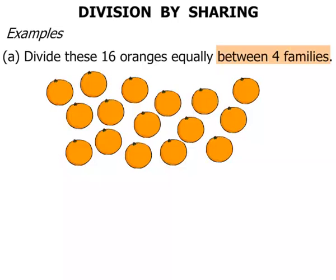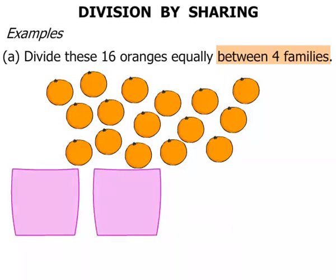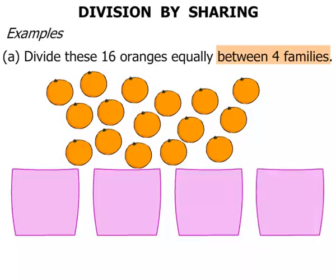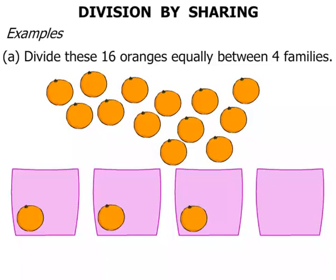And we are splitting them up equally between 4 families. So let's draw 4 baskets: 1, 2, 3, 4. Simply a matter of moving the oranges into each of the baskets — 1, 2, 3, 4.